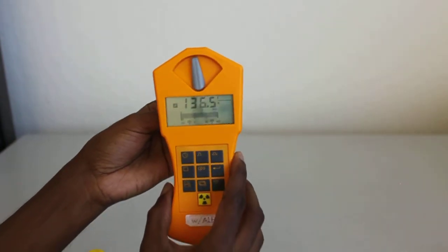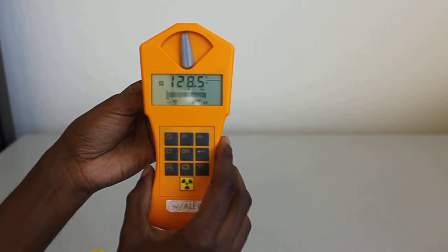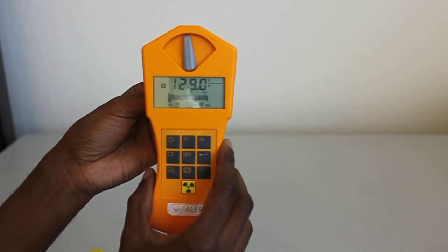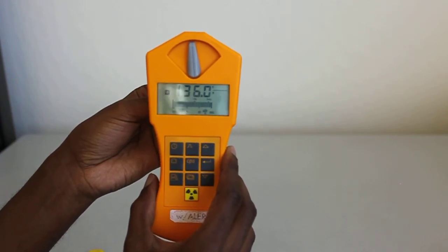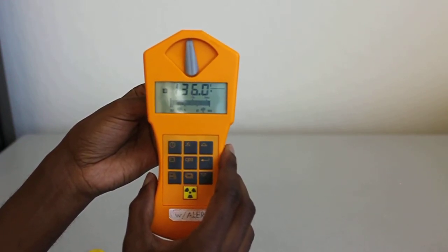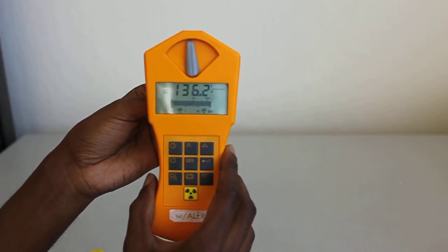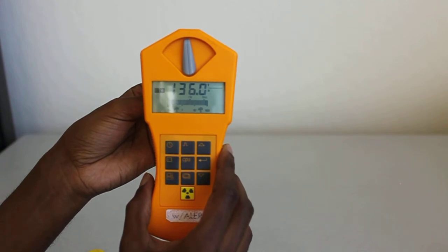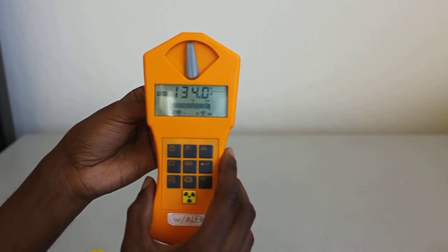Wow. We're getting a reading here of 130 per second. It's a lot more than the other device. That's per second. The other one was per minute. So the other one was 350 per minute, this is 136 per second. So as you can tell, this is a much more sensitive device.